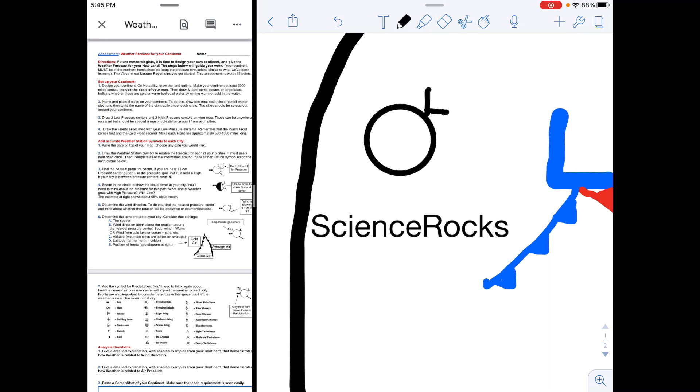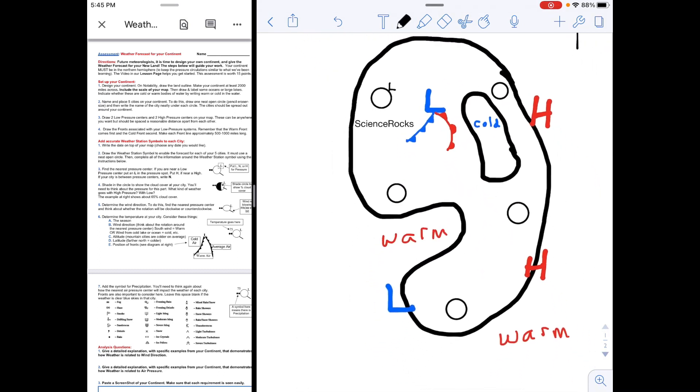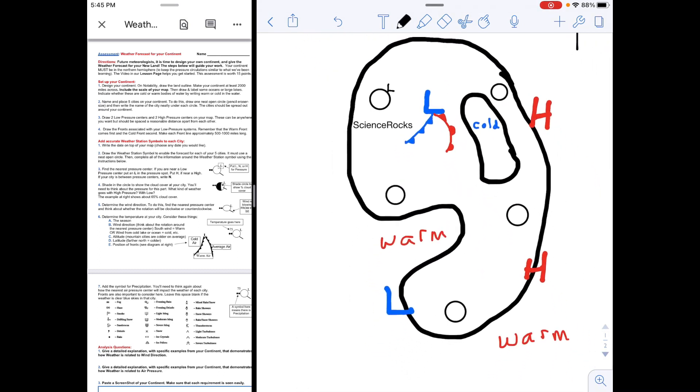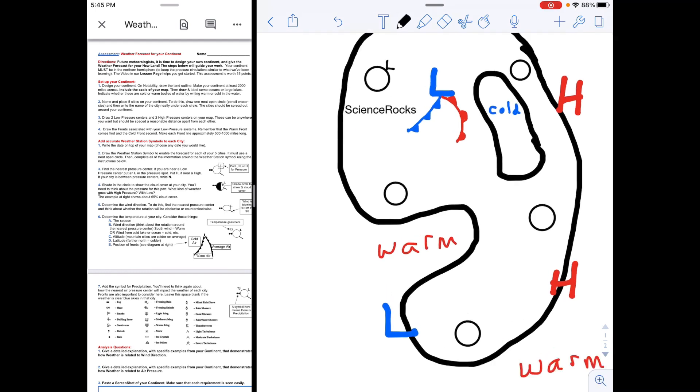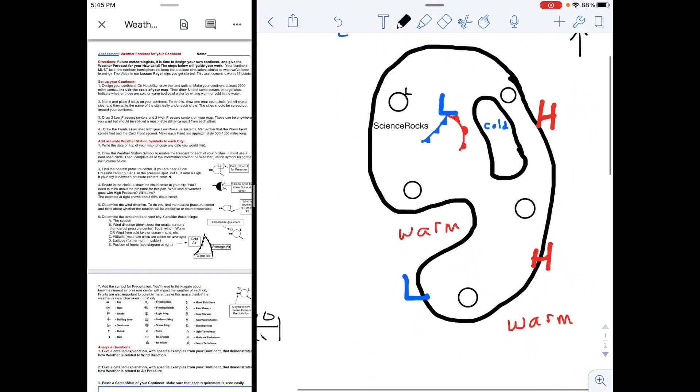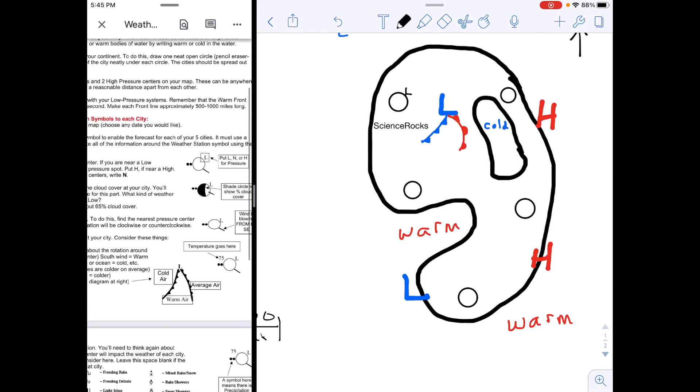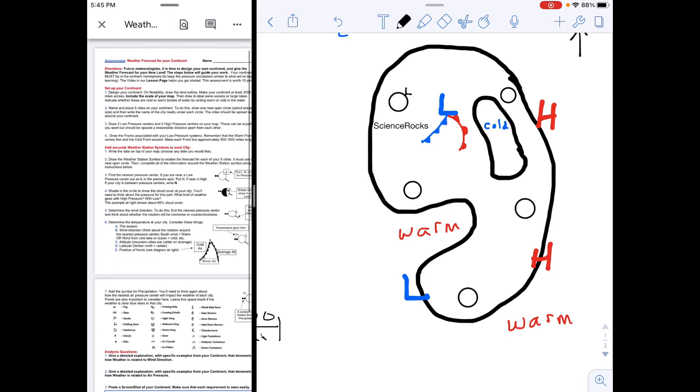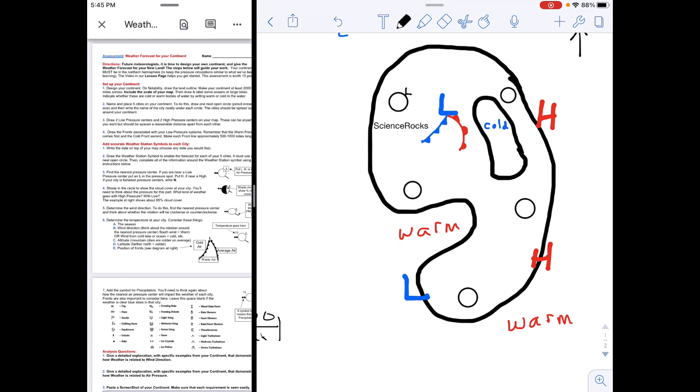...or if it's in between pressure centers. So let's find an example there. If we had a city like this one here that's in between the pressure centers, then it gets an N for normal pressure—for typical standard pressure. You do that L or that H or that N for each of the five cities.